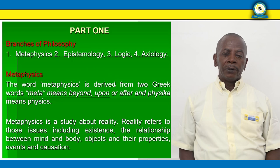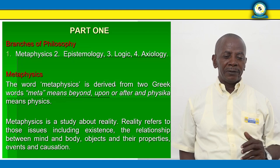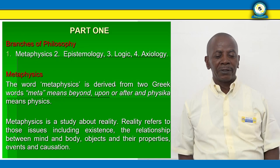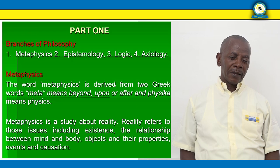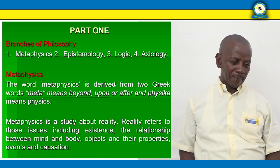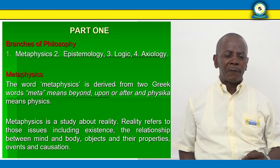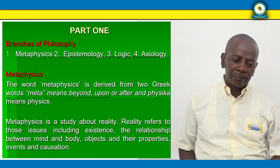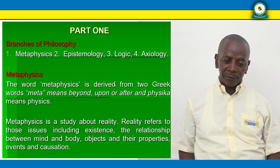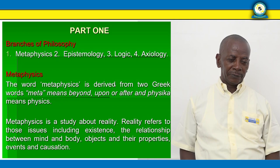To go through this course, we have divided it into six knowledge areas. Today I would like to go through the first knowledge area, which is to know about philosophy. Philosophy has four different branches: metaphysics, epistemology, logic, and axiology.